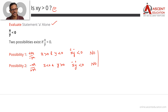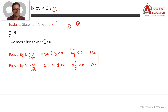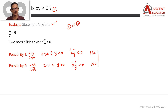Since Statement A is sufficient, our answer options narrow down to 1 or 4. It cannot be 2 or 3. If B is also sufficient independently, the answer would be 4; we need to evaluate Statement B to decide between 1 and 4.